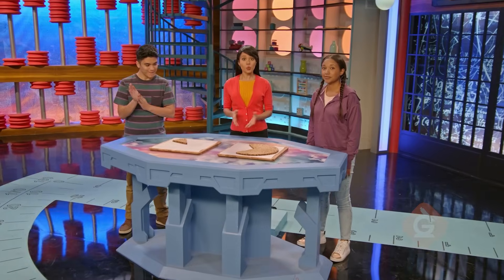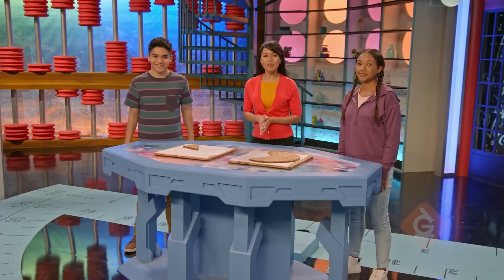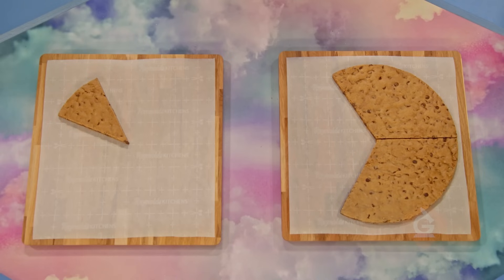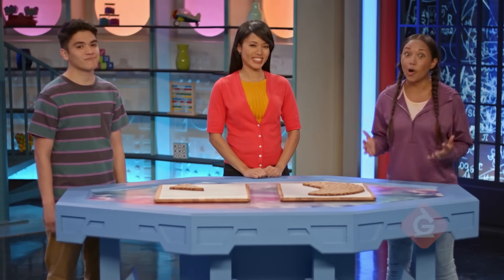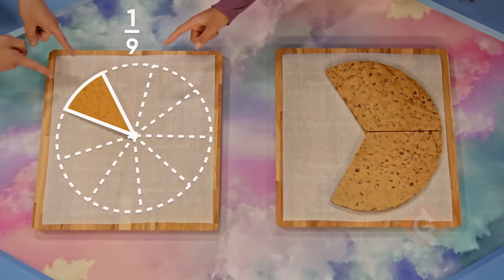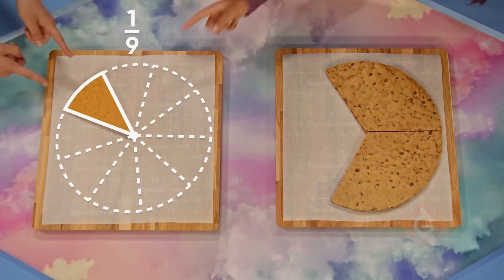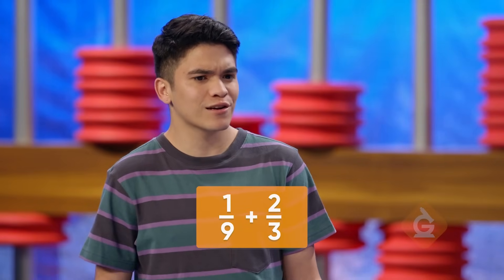Let's see how adding fractions with unlike denominators can help us eat giant cookies. These cookies were so big that we couldn't eat them all. Marcos has 1/9 of a cookie left, and I have 2/3 of a cookie left. To find the total, we could add 1/9 plus 2/3.